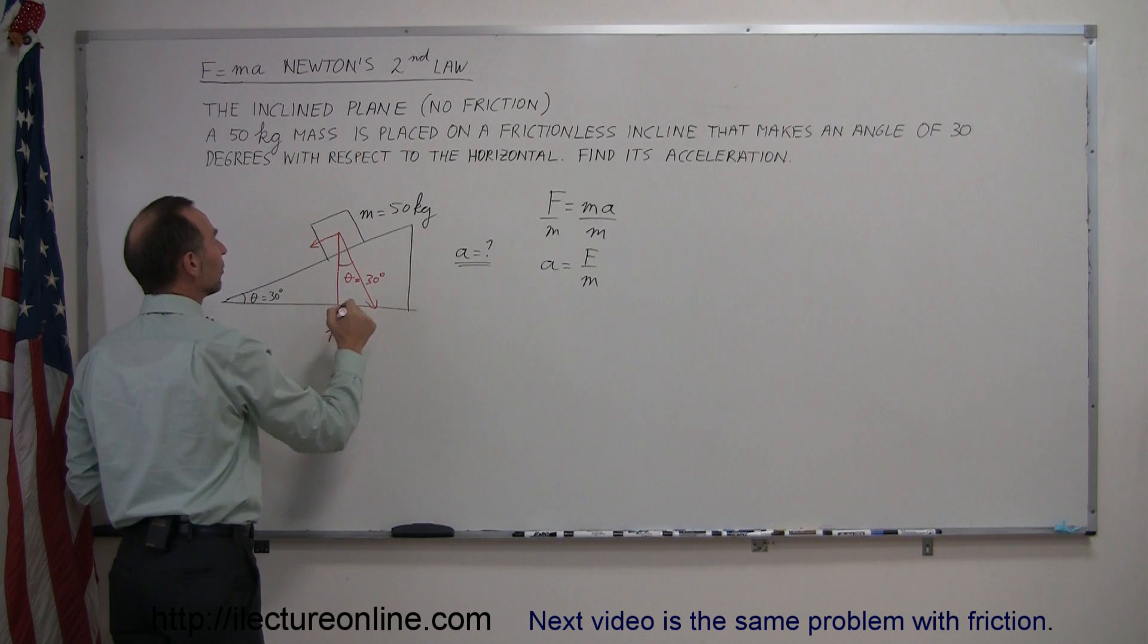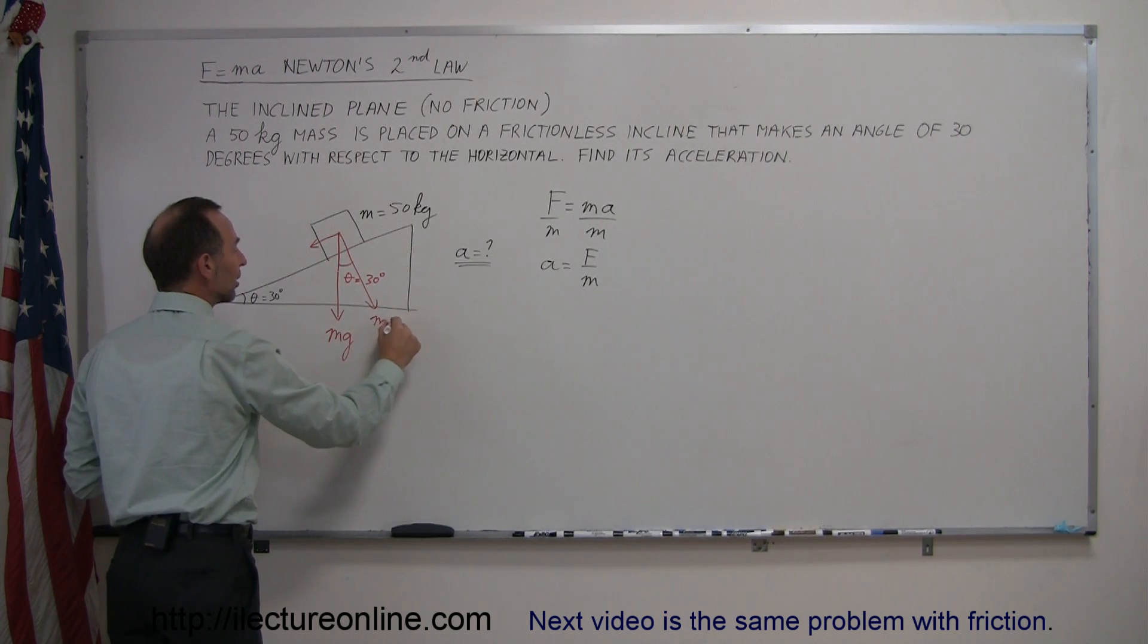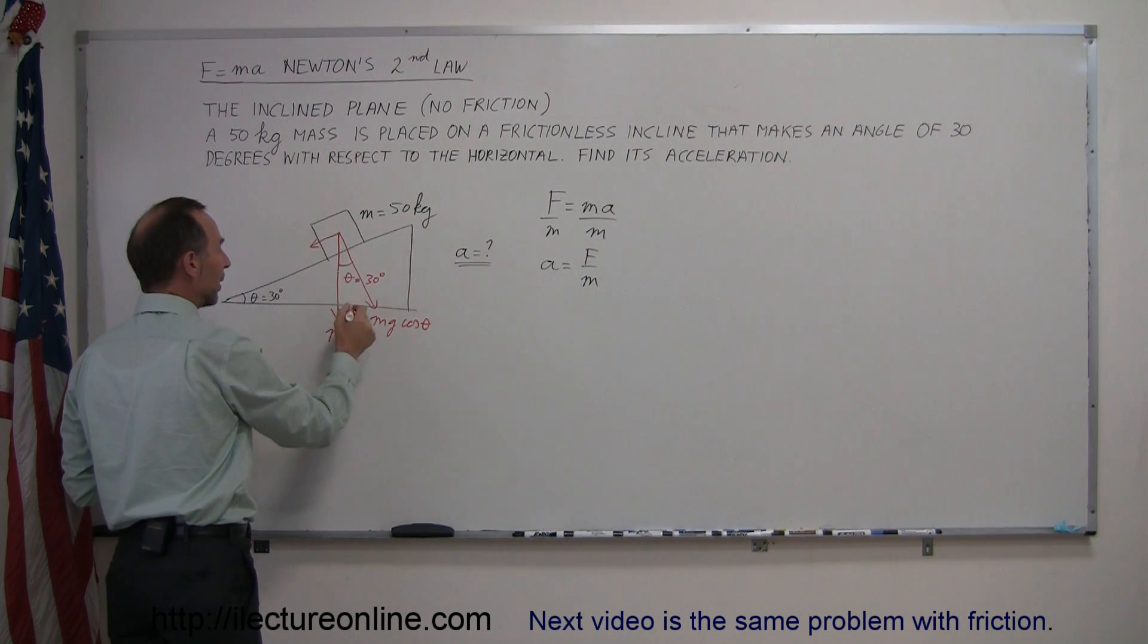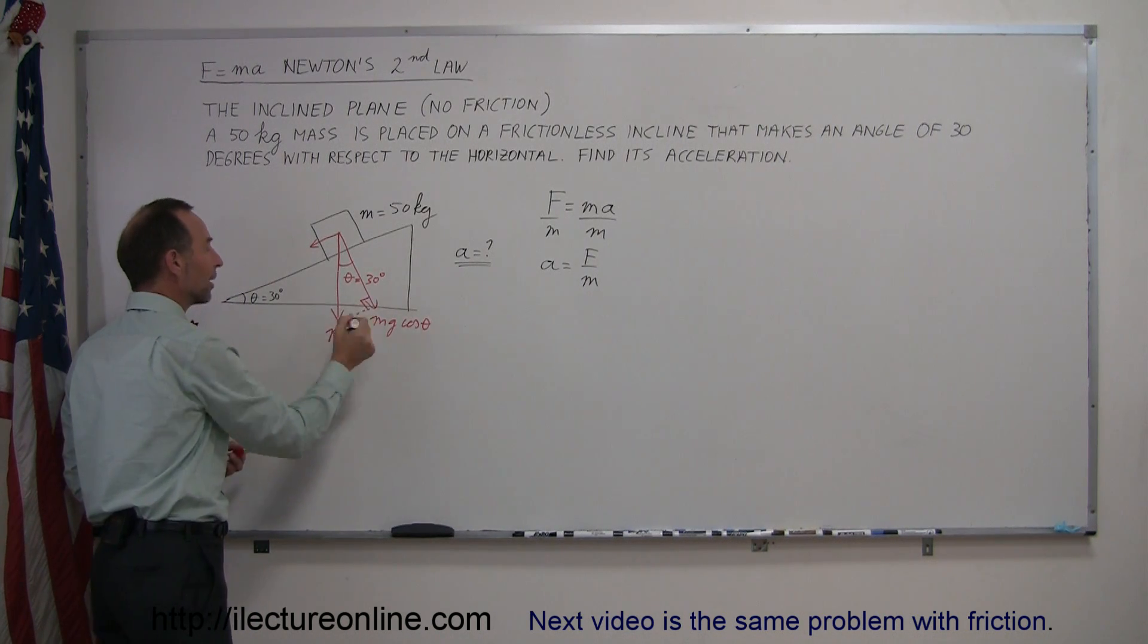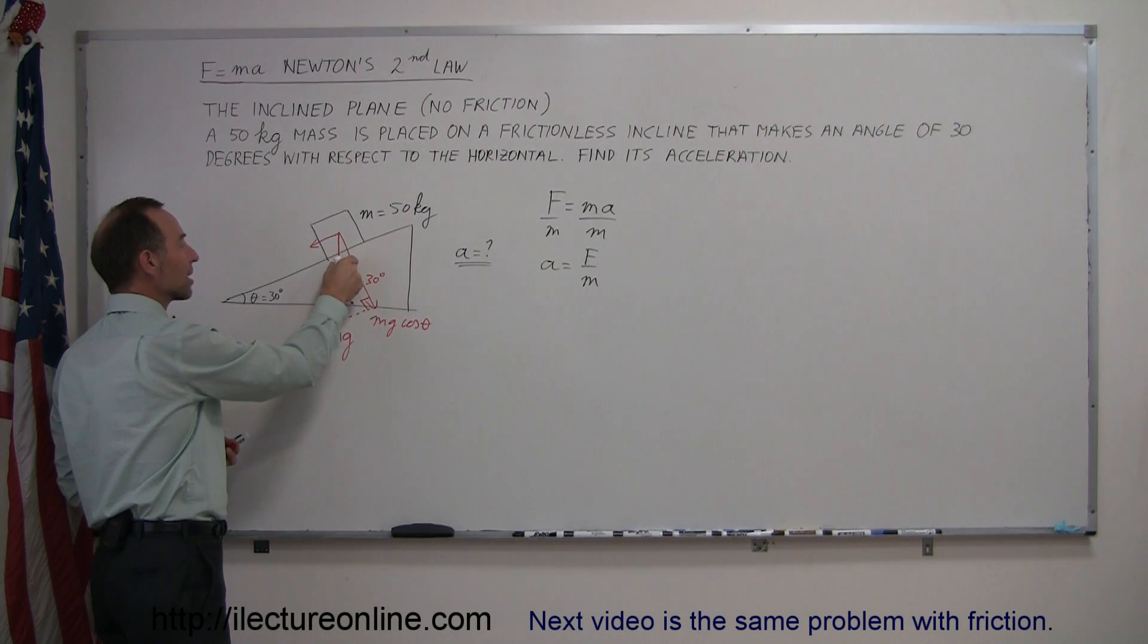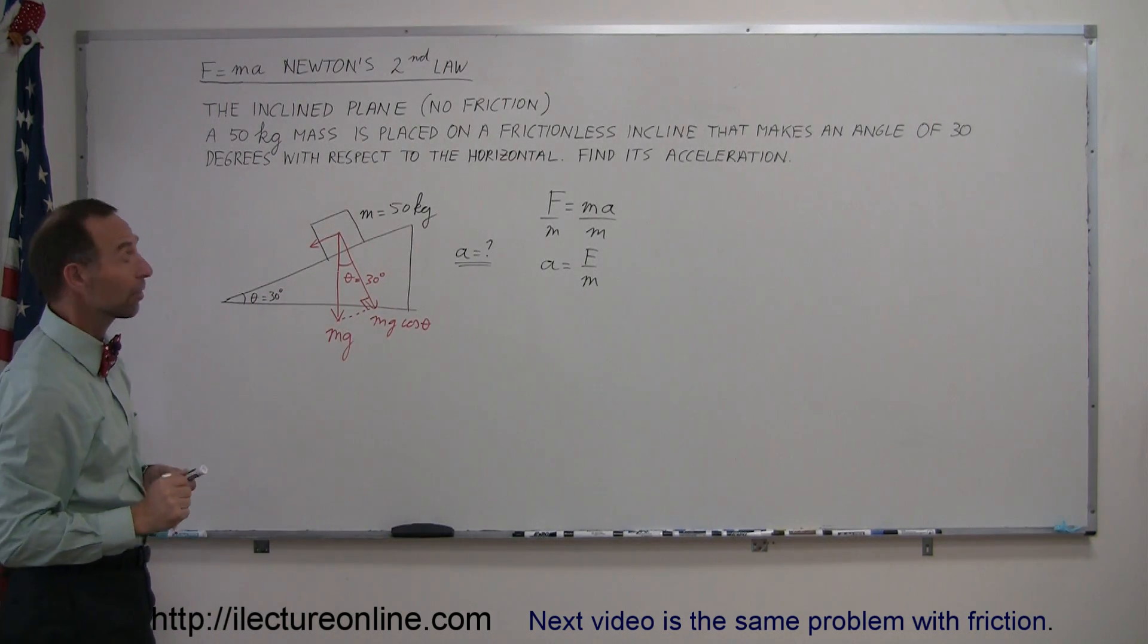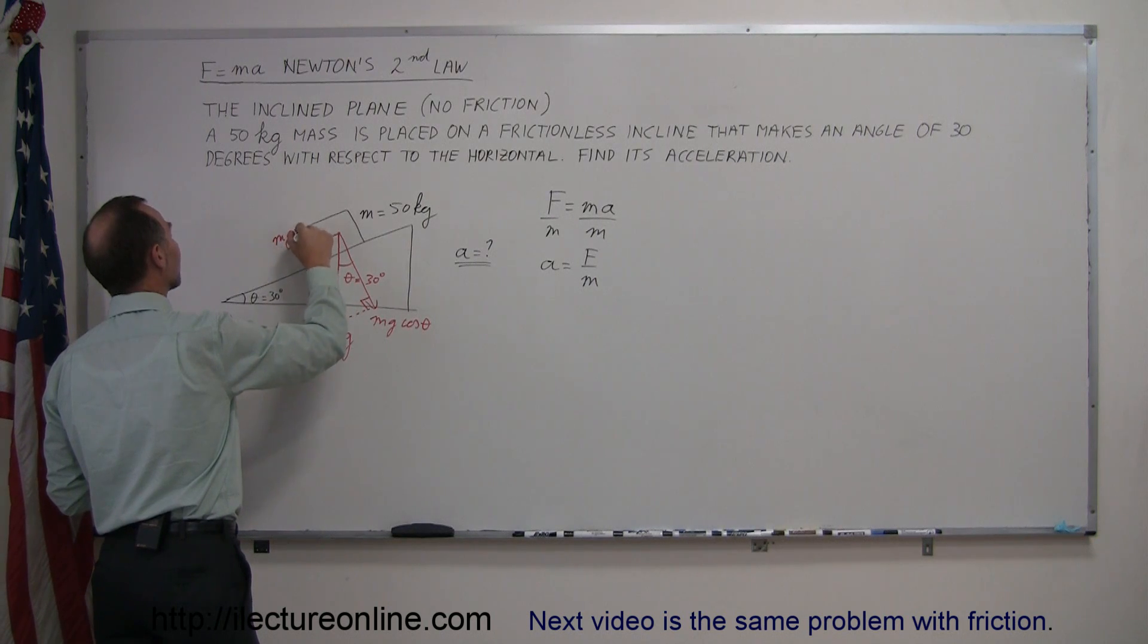So this is also 30 degrees, and therefore that makes this component equal to mg times the cosine of theta, because it's adjacent to the hypotenuse of the triangle. If you make a triangle out of that, you can see that here's the right angle, and this angle here, this side is adjacent to this angle right there, so it's mg cosine theta. That makes this component mg sine theta.